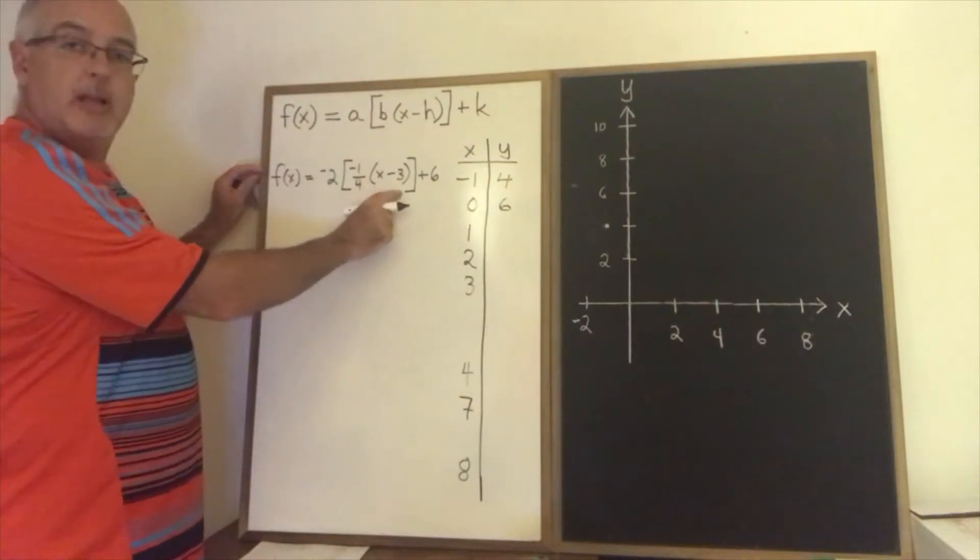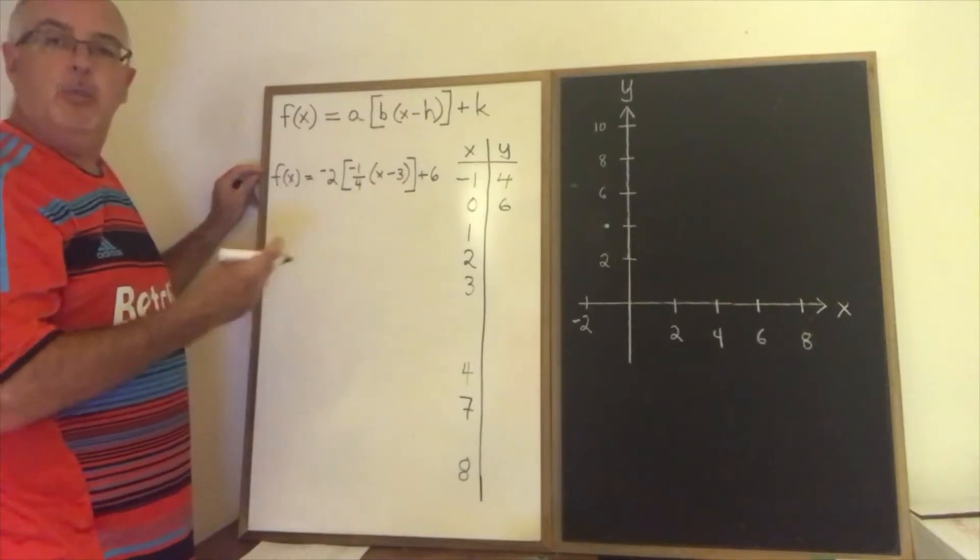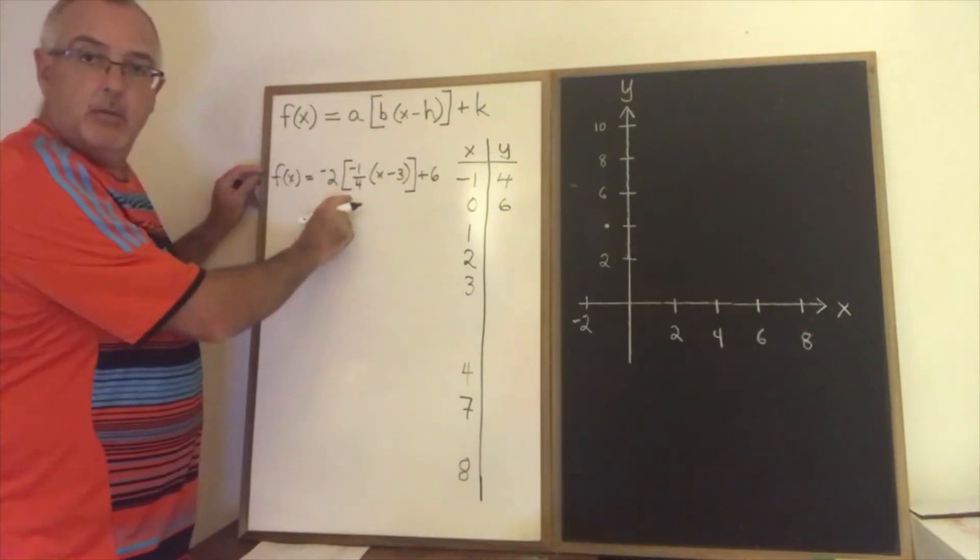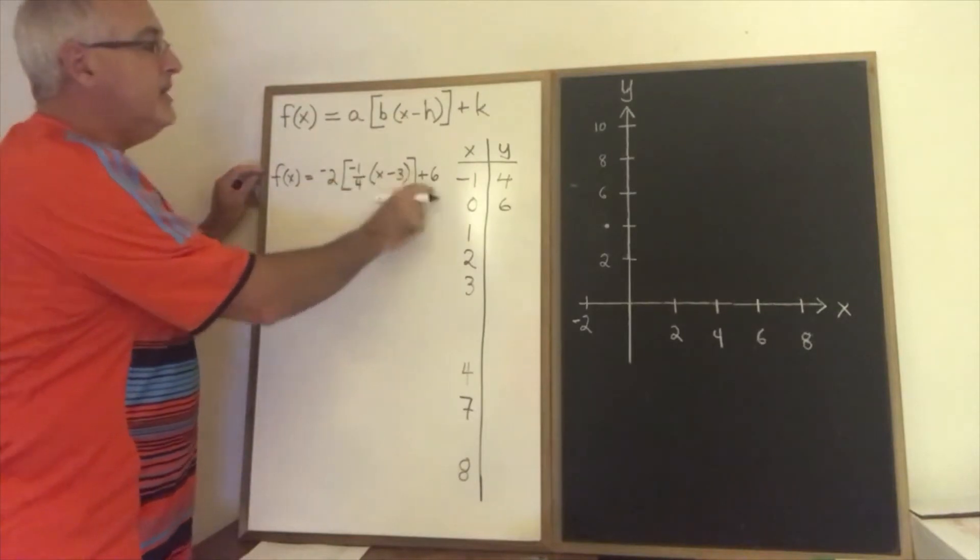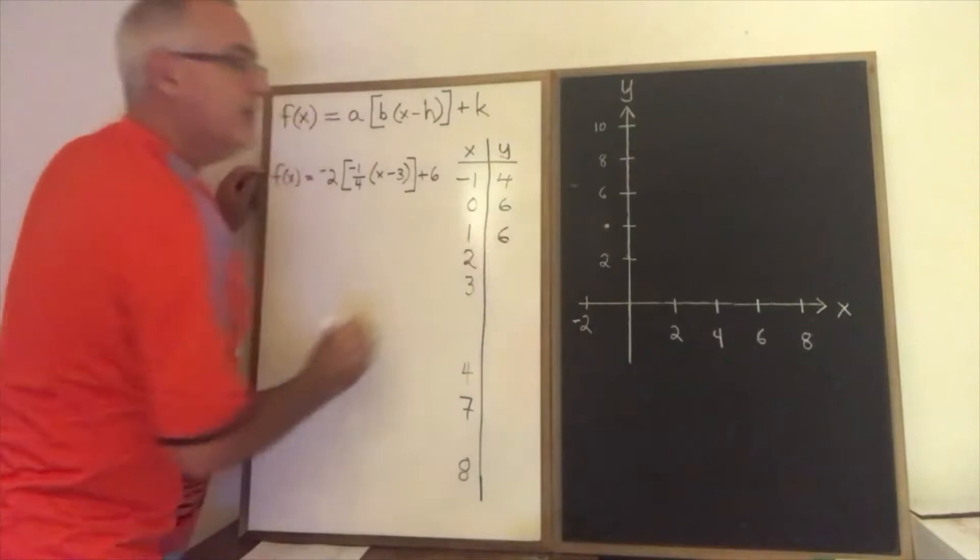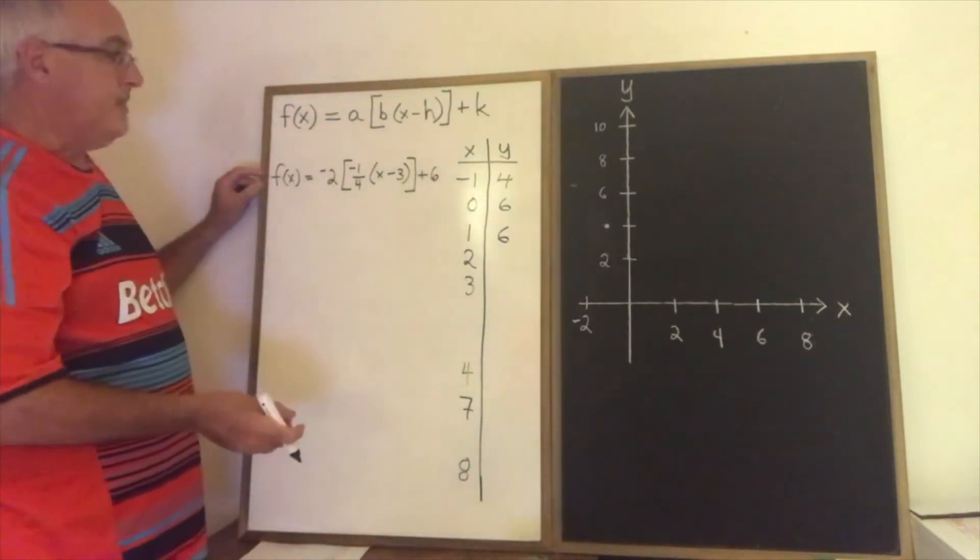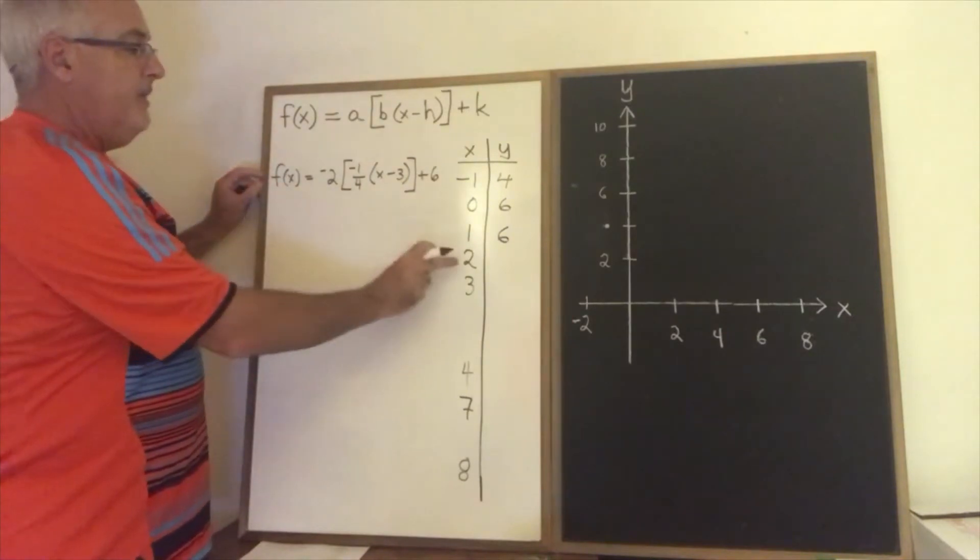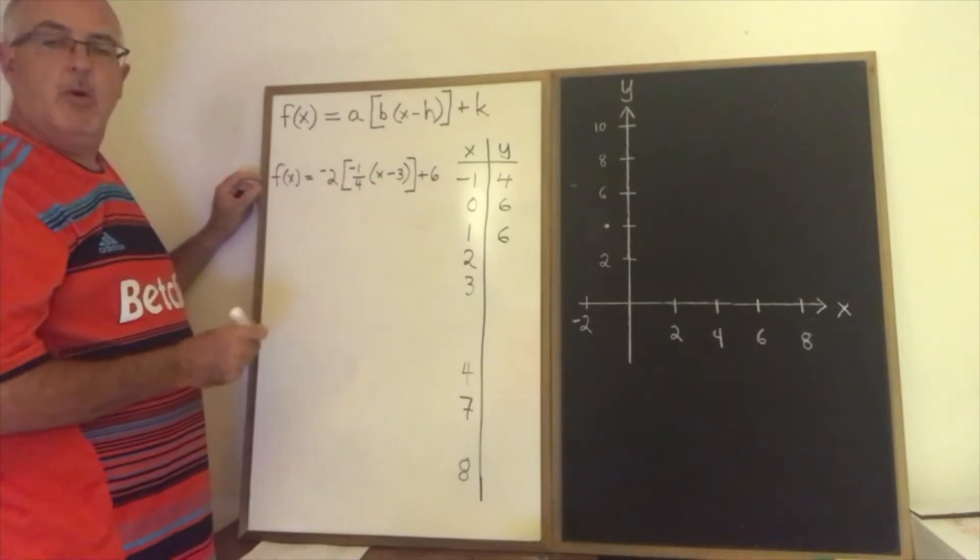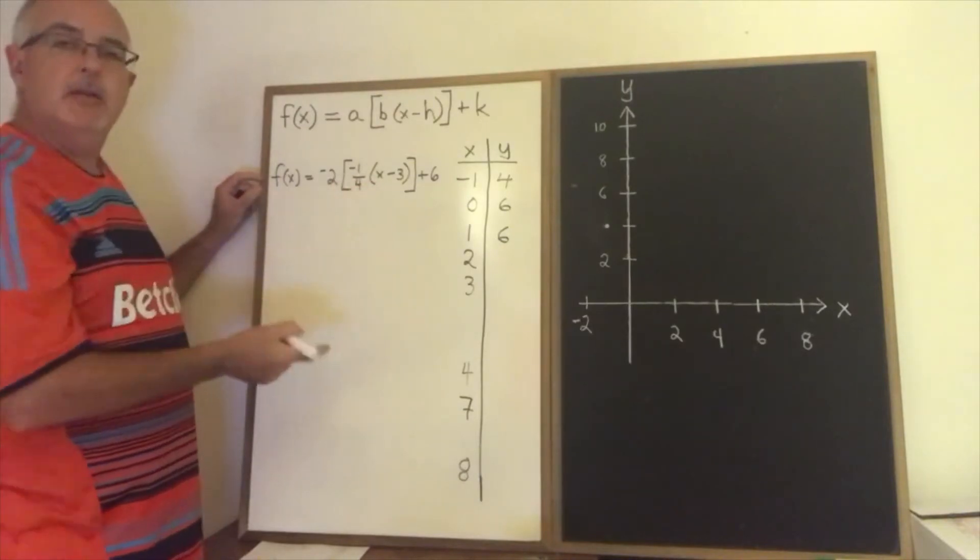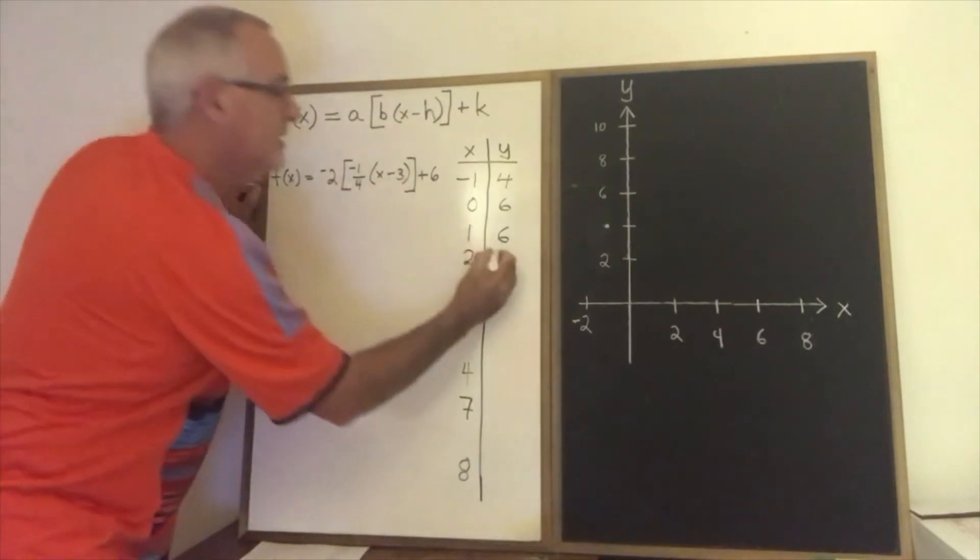If x is 1, 1 minus 3 is negative 2. Negative 2 times negative 1 quarter is positive 1 half or positive 0.5. The greatest integer less than or equal to that is 0 again. 0 times negative 2 is 0 plus 6 is 6. We get another 6. Get used to this happening when you're doing a large table of values for a step function. If x is 2, 2 minus 3 is negative 1. Negative 1 times negative 1 quarter is positive 1 quarter or positive 0.25. And the greatest integer to left of that on the number line is 0 again. 0 times negative 2 is 0 plus 6 is 6.